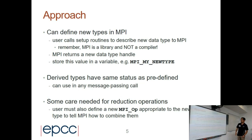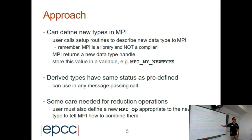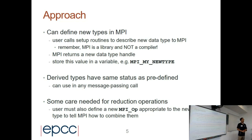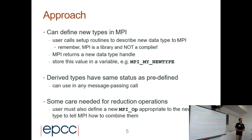The idea is that we use a function from the MPI library to create a new data type. Having this new data type, we can use it for send, receive, and collective communications. We should take care with reduction operations, because for reductions we should define the MPI operation we want to perform — sum, multiplication, etc. It's not easy if we use a derived data type; we should define the operation.